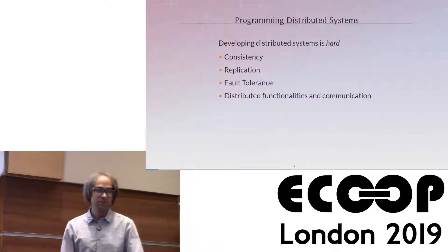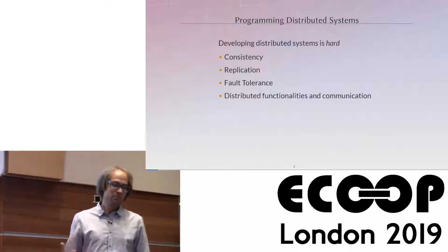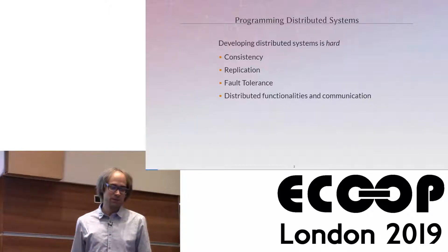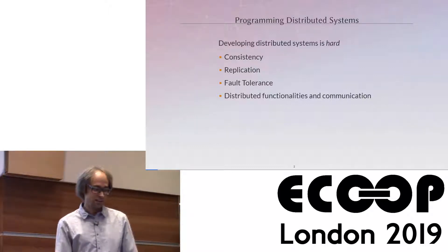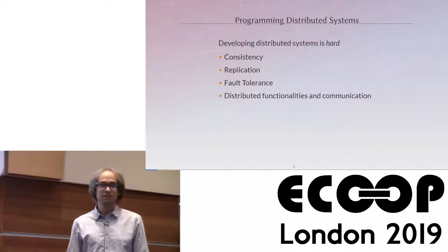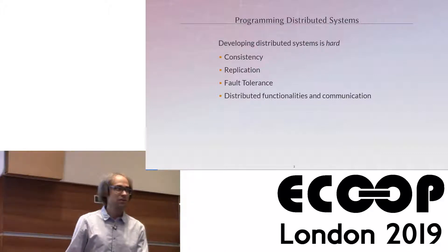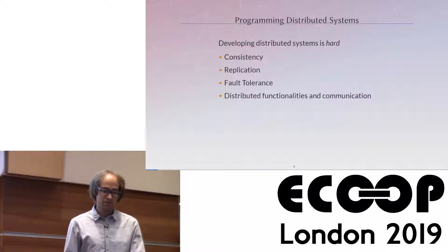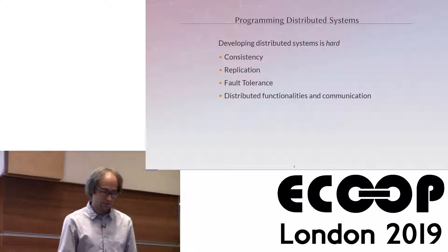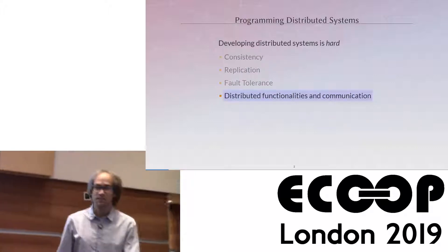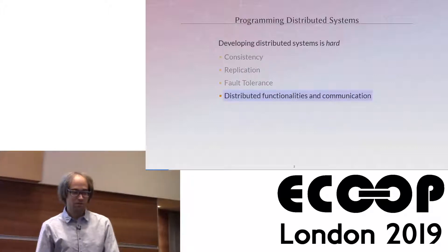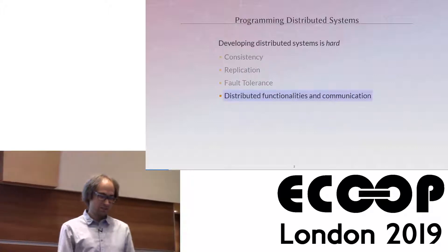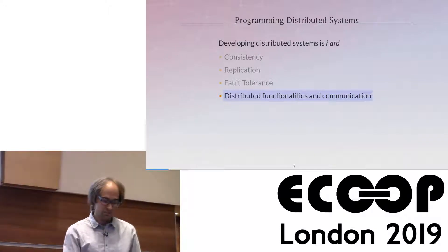Lots of modern software is inherently distributed, but developing distributed systems is hard. There are many issues developers have to deal with, like keeping data consistent, keeping data available by replicating it, making the system tolerant of faults, and handling communication between different hosts to implement distributed functionality. This talk will focus on the last part: language abstractions for implementing distributed functionalities in a modular way.